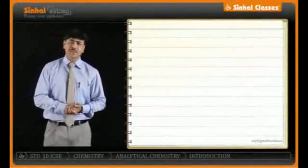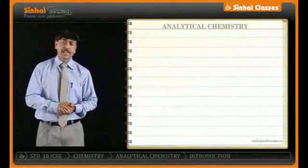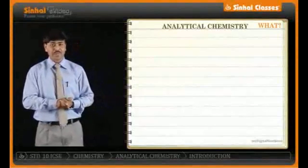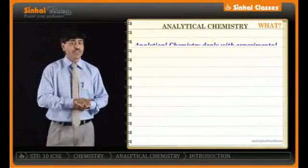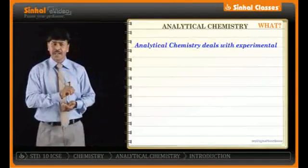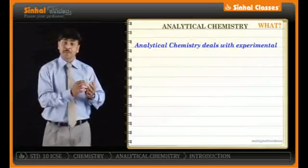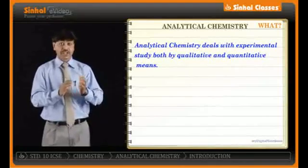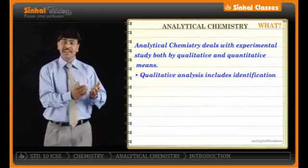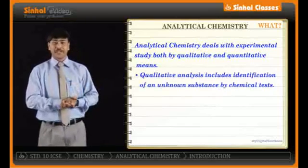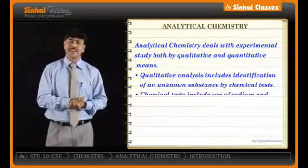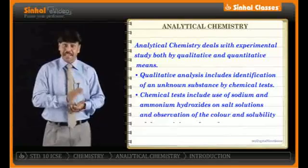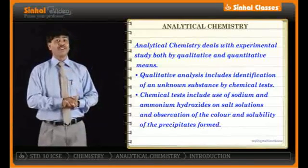Let us start with a very interesting topic: analytical chemistry. What do you mean by analytical chemistry? It is a branch of chemistry which deals with the experimental study, both qualitative and quantitative. That means you go into the lab, perform the experiment, and come to know the observations. Previously in your lower standard you must have learned about chemicals and precipitates.